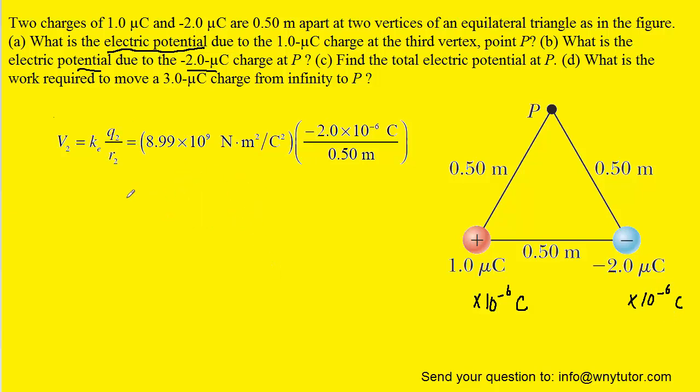We've gone ahead and plugged in all the known values, and when we compute that, we get an electric potential of approximately negative 3.6 times 10 to the positive 4th. And again, the unit is volts.